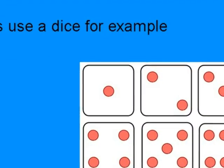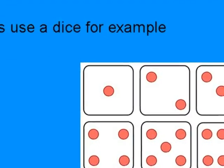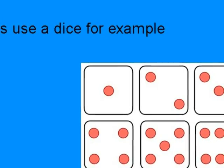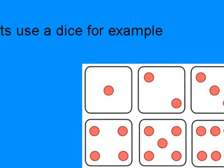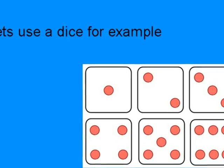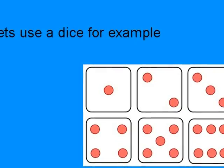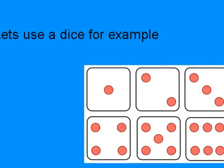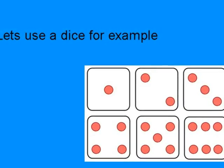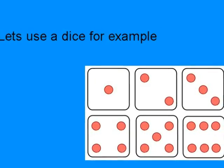Let's use a dice for example. When you roll a dice, you can get the choice of rolling a 1, a 2, a 3, a 4, a 5, or a 6.